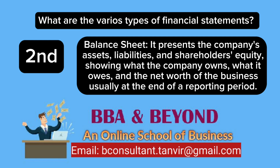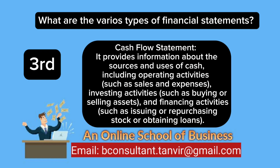The balance sheet shows the net worth of the business, usually at the end of a reporting period. The third is the cash flow statement, which provides information about the sources and uses of cash, including operating activities such as sales and expenses, and investing activities such as